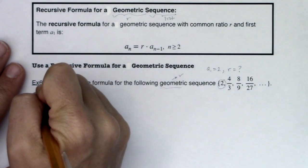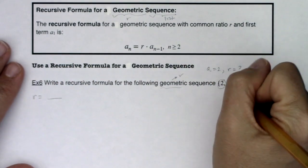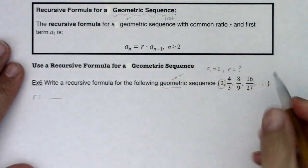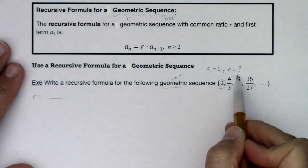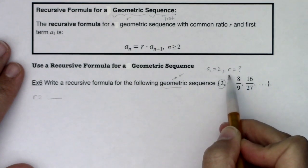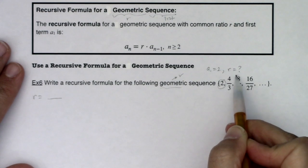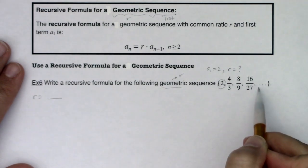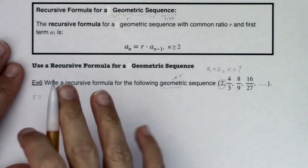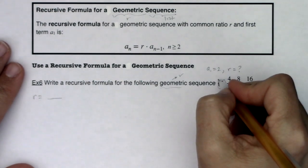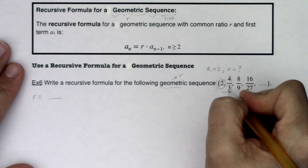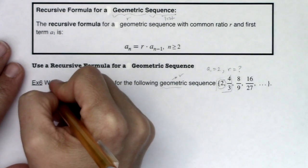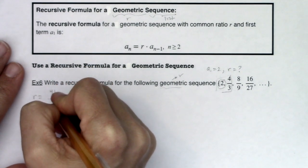Well, if I want my r, it's a ratio of any current term to the previous term. So I can take a look at any of these pairs. I can look at 8 ninths and 16 27ths, 4 thirds and 8 ninths, or 2 and 4 thirds. I can take the first two terms, second and third term, or the third and fourth term. Doesn't matter, but I want to look at them in ratio because I need a common ratio. So I'm going to just take a look at these first two together.